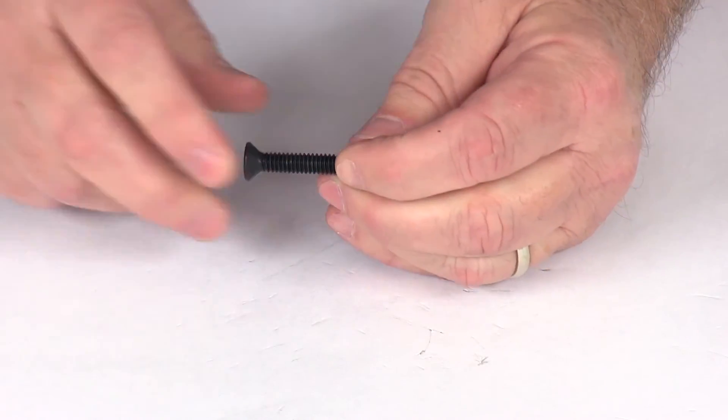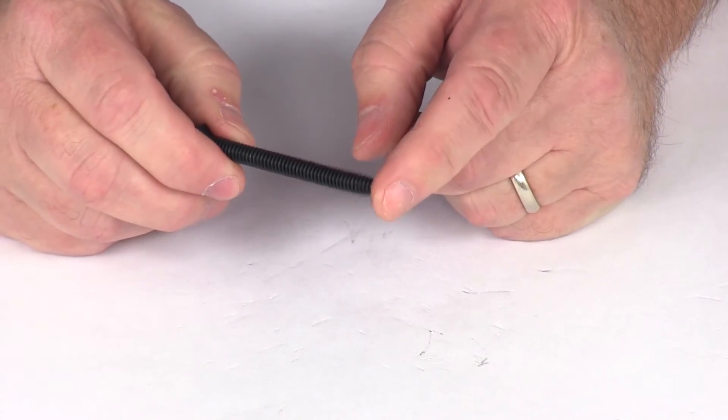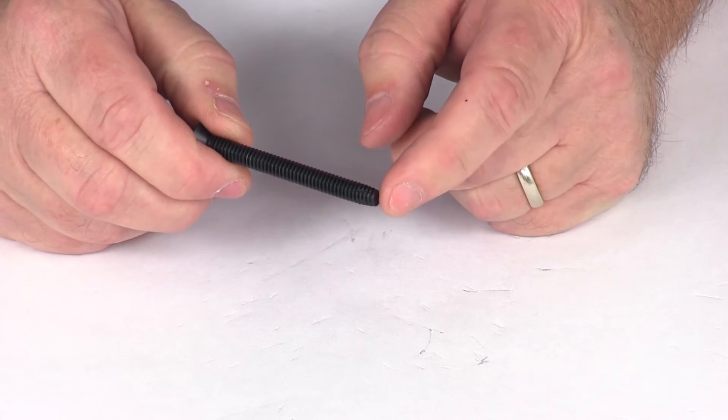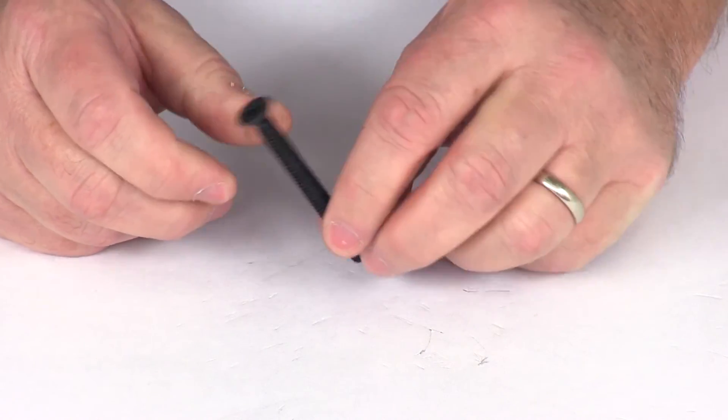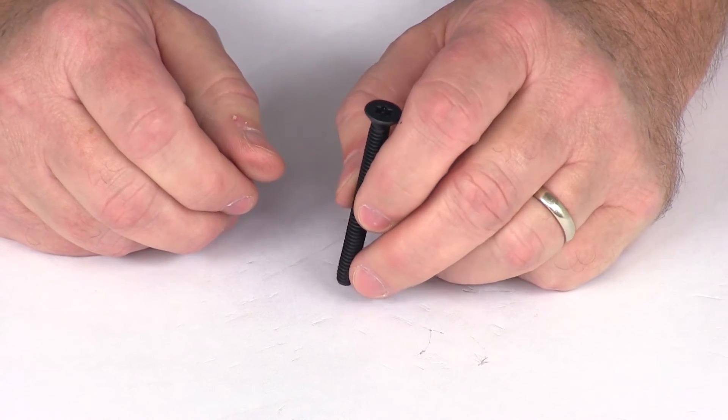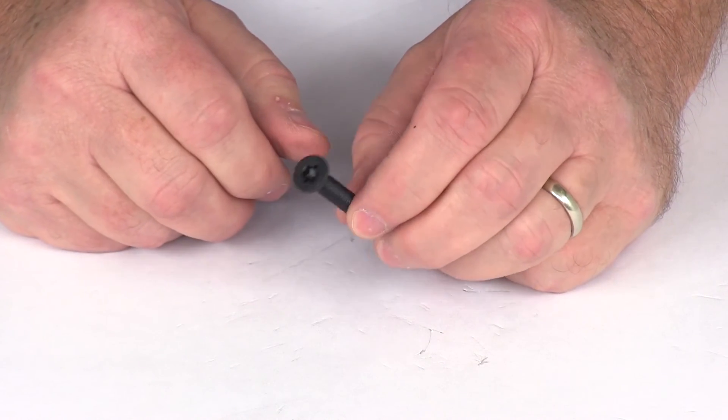Now the type F point I mentioned earlier, right here at the bottom, that's a blunt tip and if you notice as I rotate it along it has multiple cutting surfaces. When you do install this it does require a 7/32 pilot hole to be drilled.